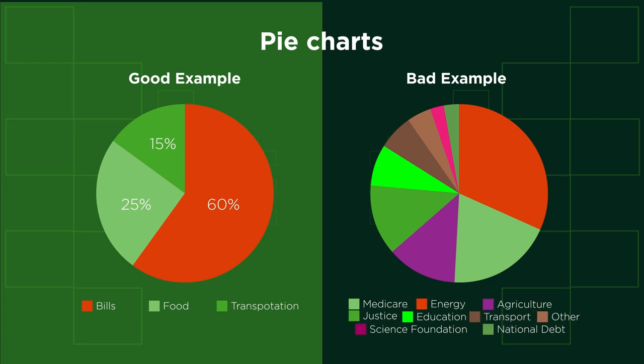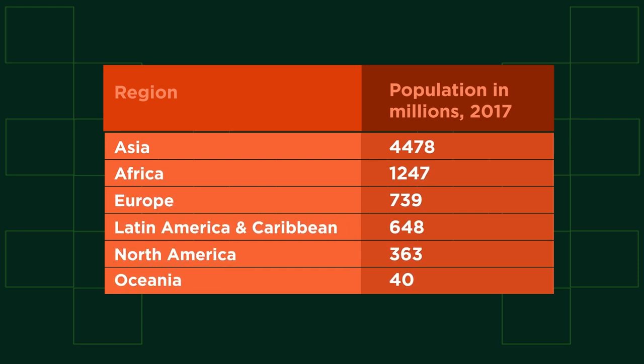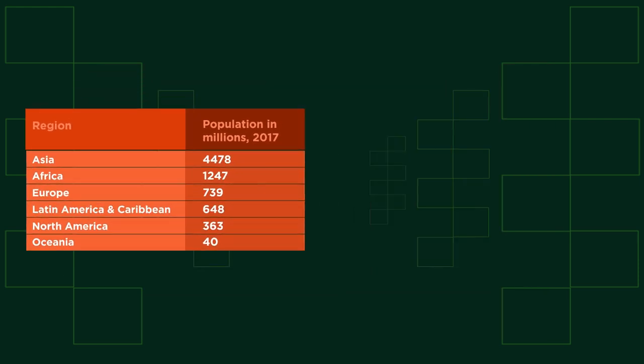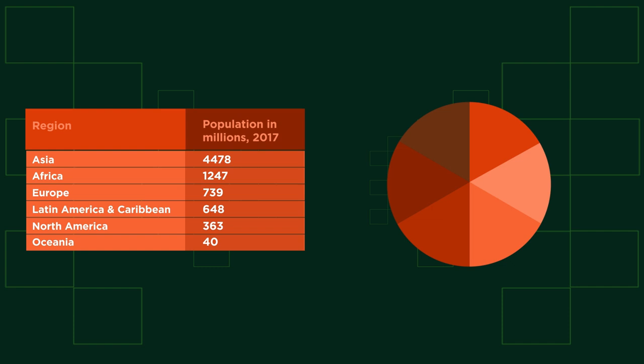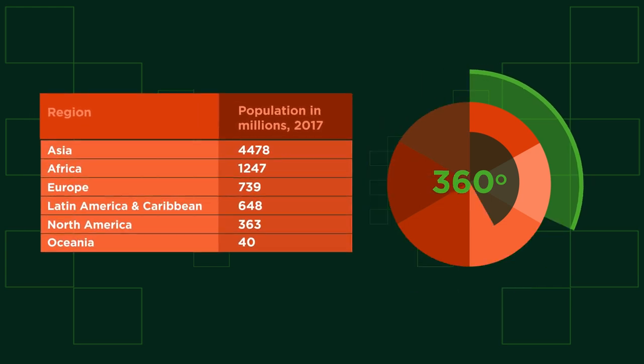Pie charts should only really be used when there are fewer than six categories. So let's turn this population data into a pie chart. We need to work out what size each sector of the pie is going to be. You should already know that there are 360 degrees in a circle, so we need to share this 360 degrees out amongst our different categories.